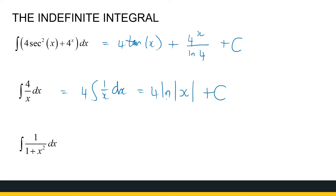When introducing the ln function, I don't know anything about x, so I must ensure that x will be in the domain of that function — that's why we take the absolute value. And the last one looks a little bit weird, but if you know your derivatives, you would recognize that as arctan — it's just the derivative of arctan(x).